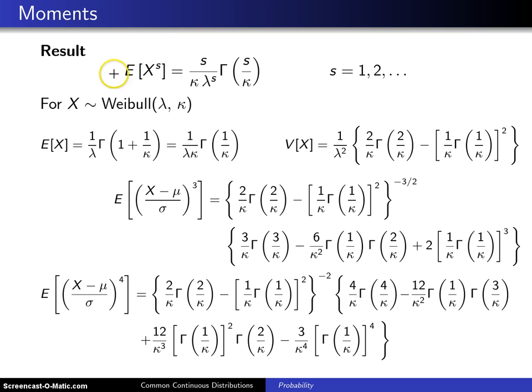But in any case, here is a result. The expected value of x to the s is s divided by kappa lambda to the s times the gamma function, evaluated at s over kappa.